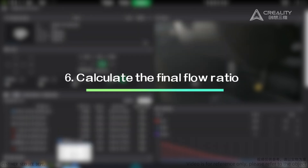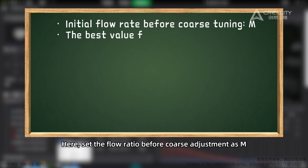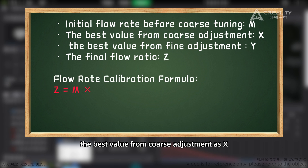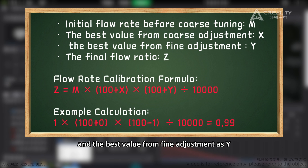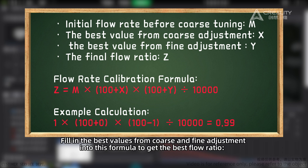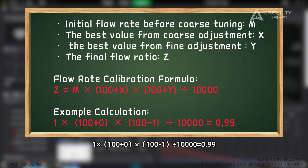Step 6 - Calculate the Final Flow Ratio: Set the flow ratio before coarse adjustment as M, the best value from coarse adjustment as X, and the best value from fine adjustment as Y. The final flow ratio Z is calculated as: Z = M × (100 + X) × (100 + Y) ÷ 10,000. Filling in the values: 1 × (100 + 0) × (100 + (-1)) ÷ 10,000 = 0.99.